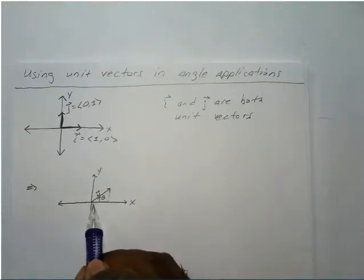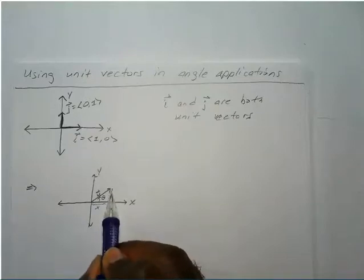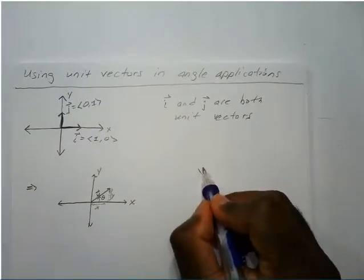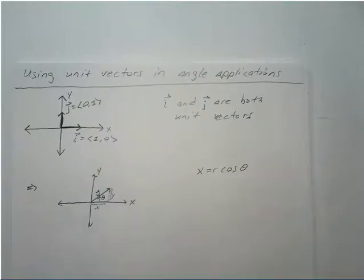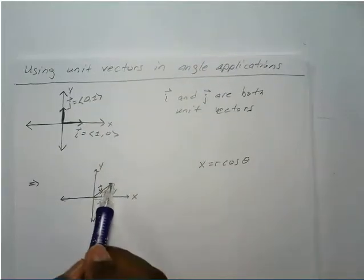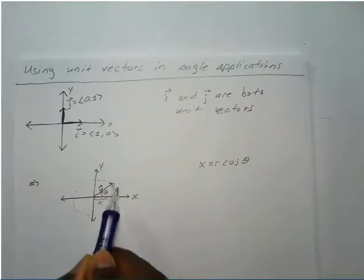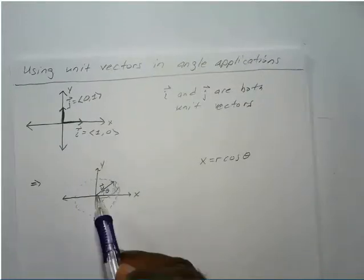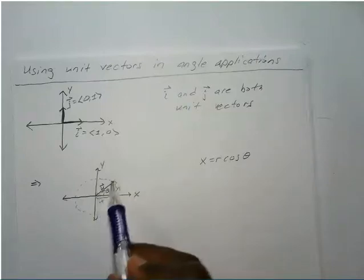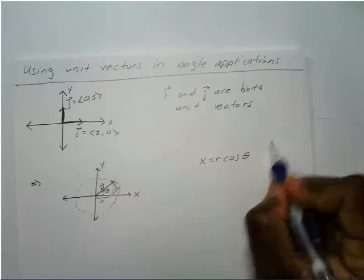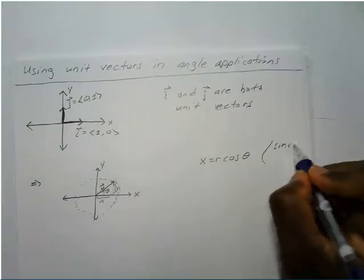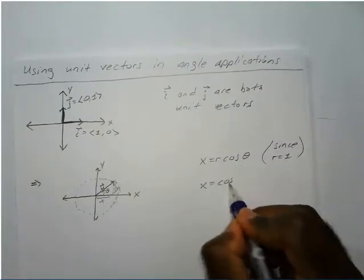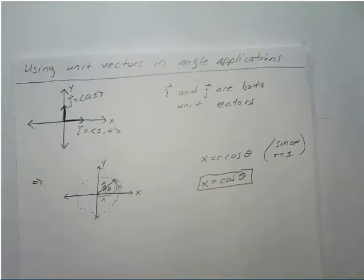We want to know our X value and our Y value. If you remember from parametric equations, X is equal to cosine of theta. Since our unit vector can go in any direction — assume it traces a perfect circle — we know that the length of that radius is one. Since R equals one, X equals one times cosine theta, or just cosine theta.